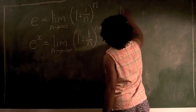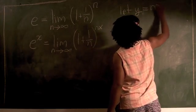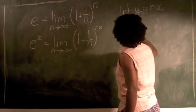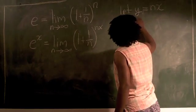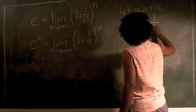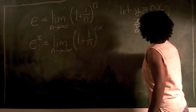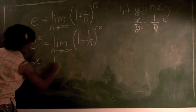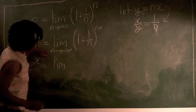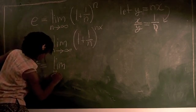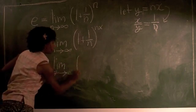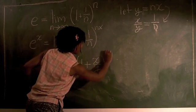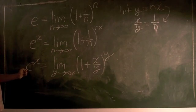So let's let y be equal to n times x. That way I can replace nx with y. And if y is equal to nx, then we also know that x over y will be equal to 1 over n. I just manipulated that equation into the second one. So now making the appropriate replacements, we have e to the x is equal to the limit as y goes to infinity of 1 plus x over y to the y power. So this is a definition of e that will be better for us to work with.